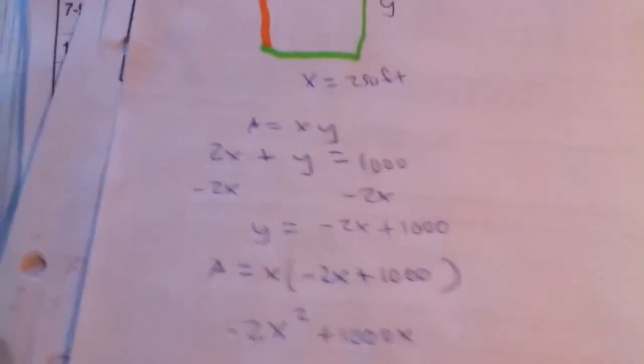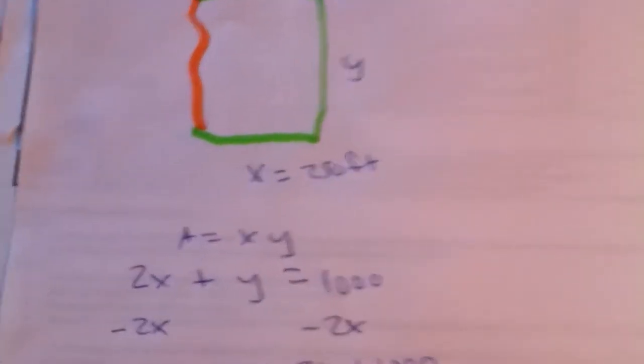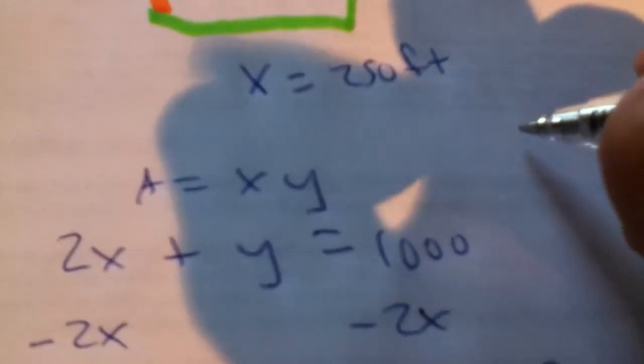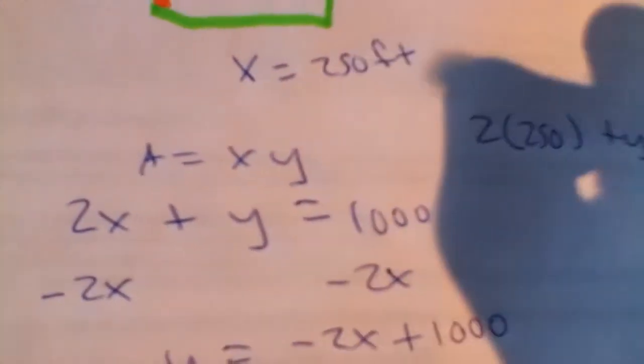Now that we have our x, we can find our y. And the equation that we're going to use is 2x plus y equals a thousand. Now, we already have our x. So, 2 times 250 plus y equals a thousand.